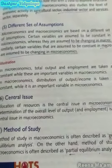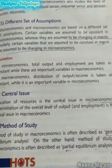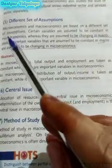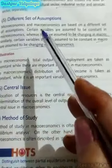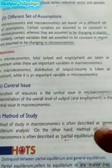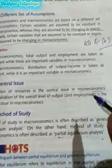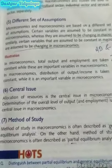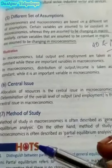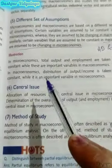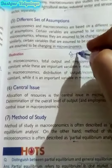The next topic is different set of assumptions. Under both microeconomics and macroeconomics there is a level of assumption. When we study microeconomics, we assume that macro variables — meaning aggregate demand and aggregate supply — remain constant. And when we study macroeconomics, we assume that individual demand and individual supply remain constant.